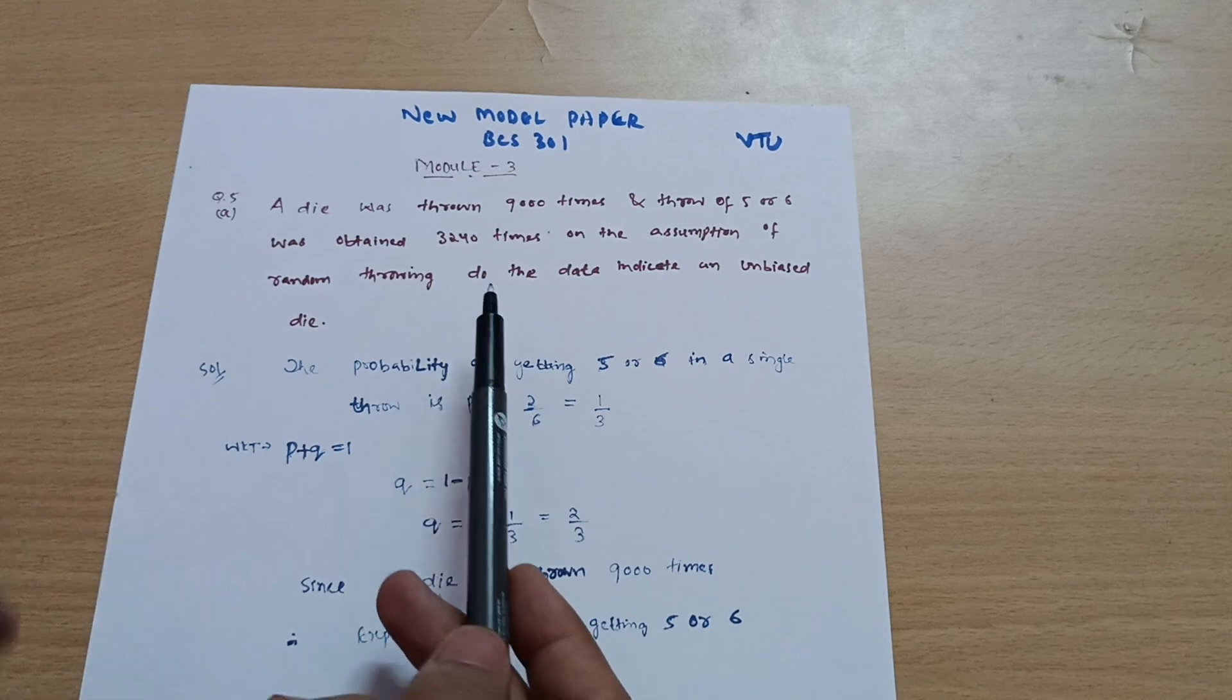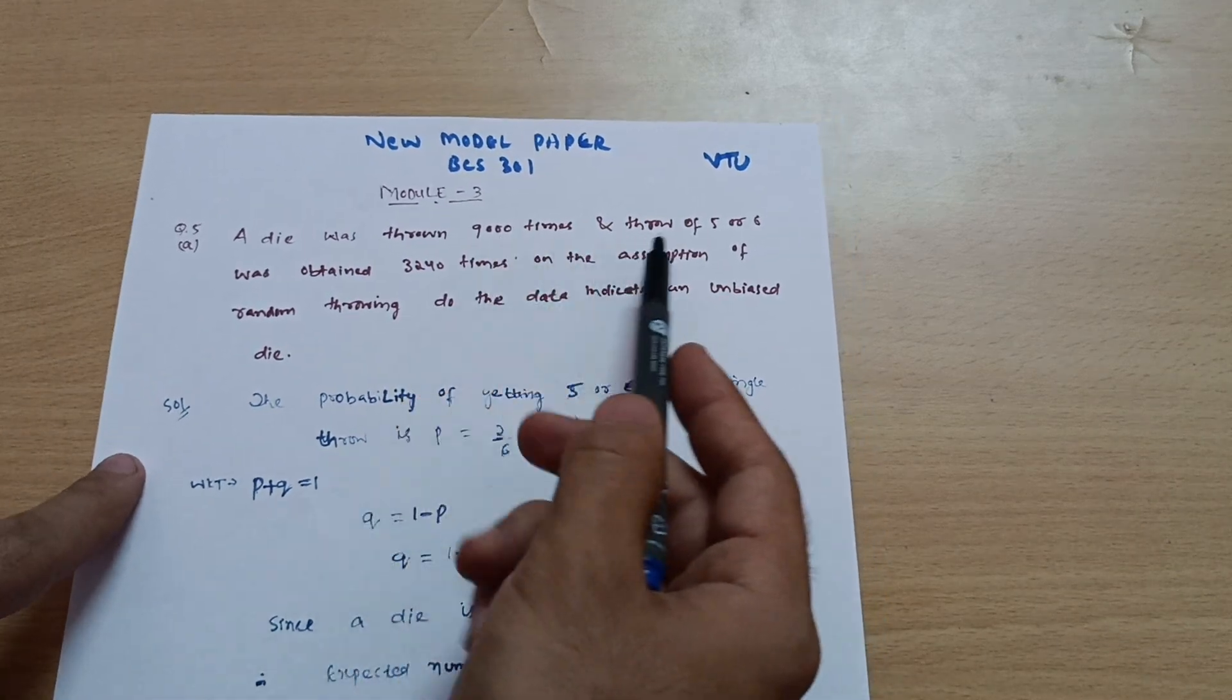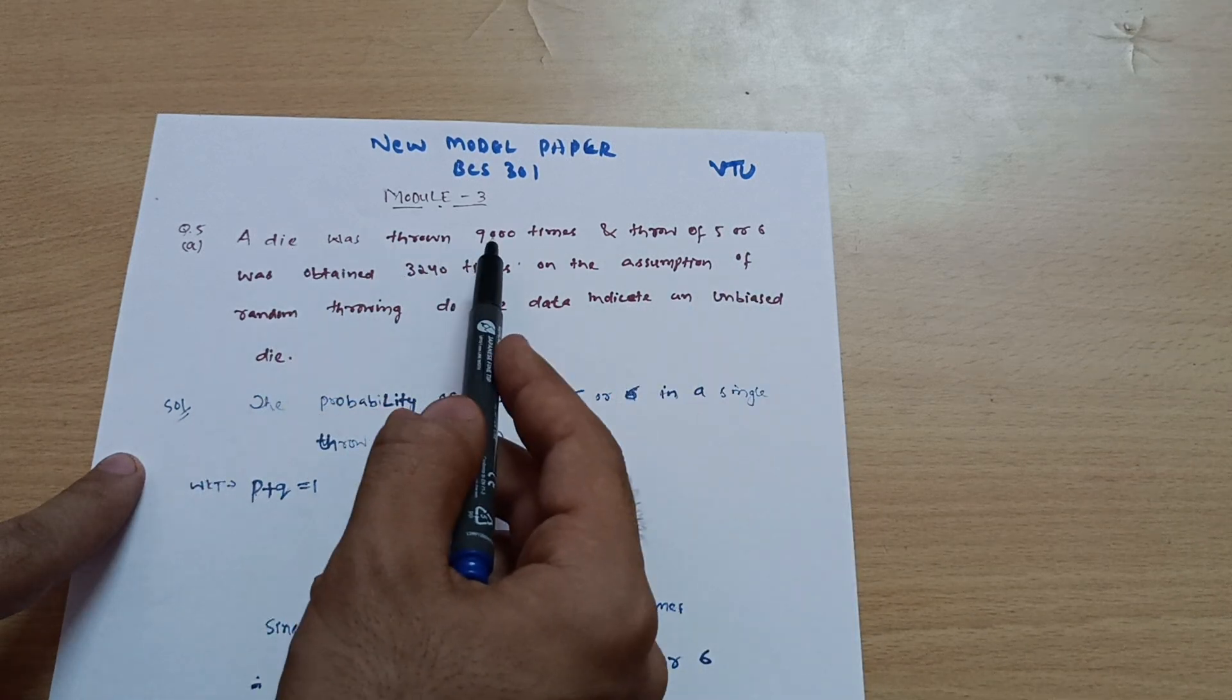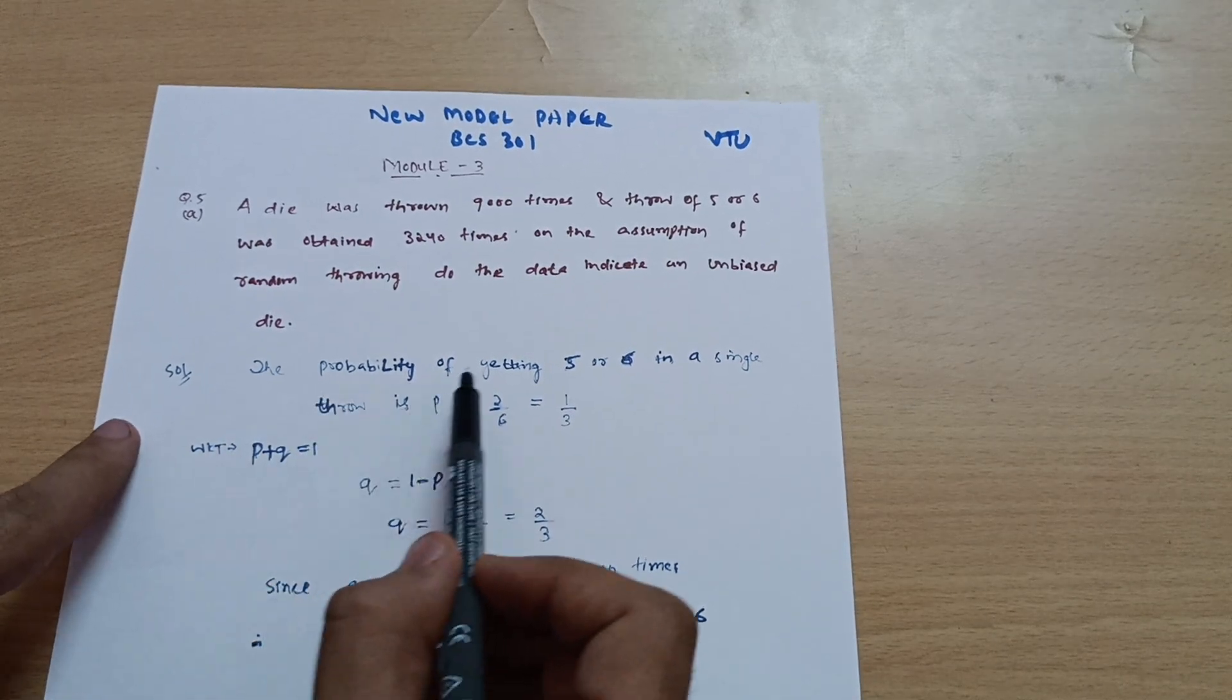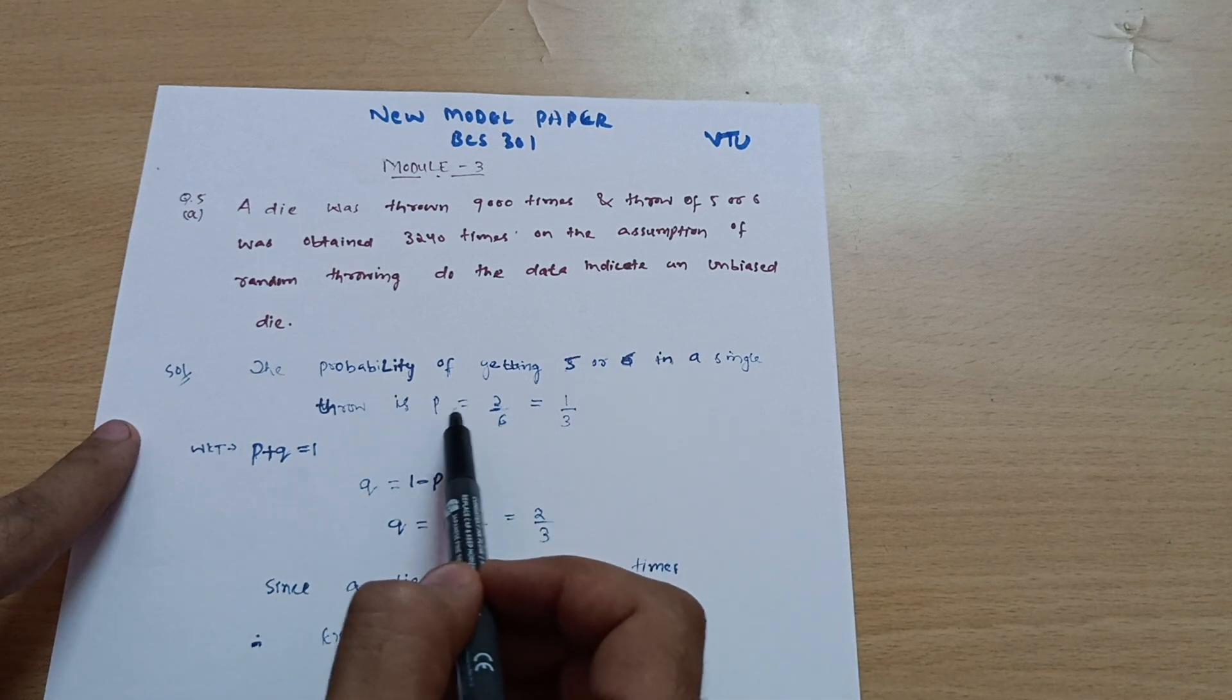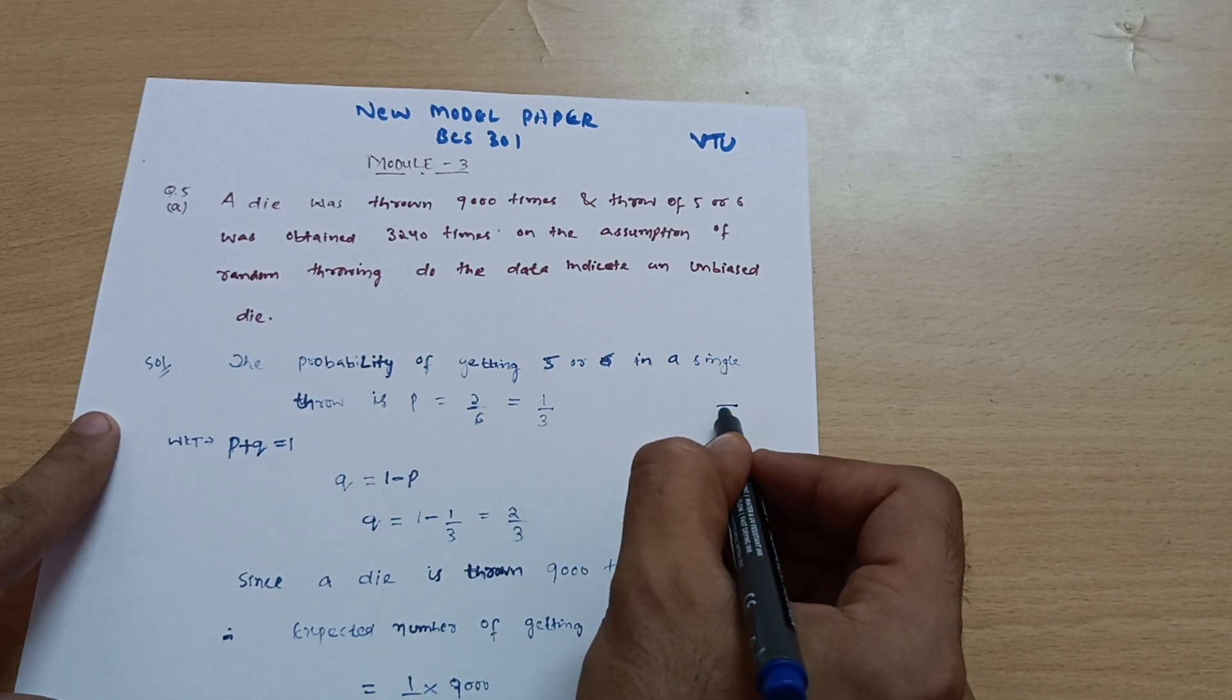As you already know a die has six faces. It is saying that five or six is coming three thousand two hundred forty times when the die is thrown nine thousand times. So I can write in the solution the probability of getting five or six in a single throw is P equals two by six.